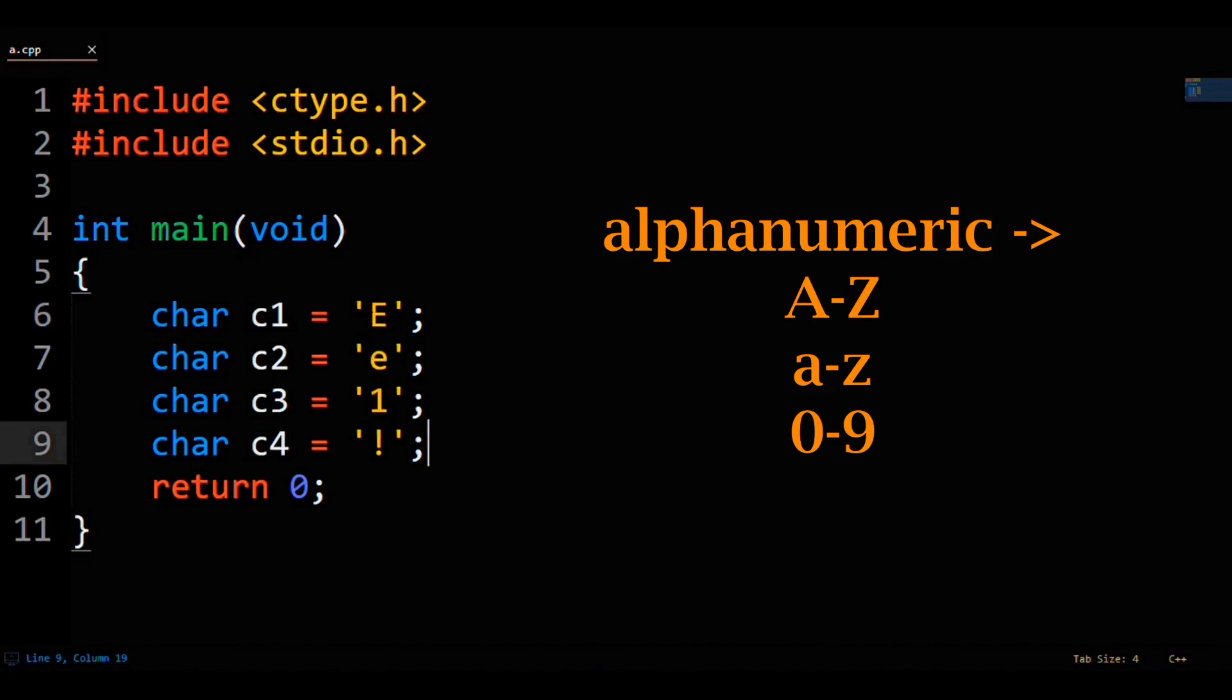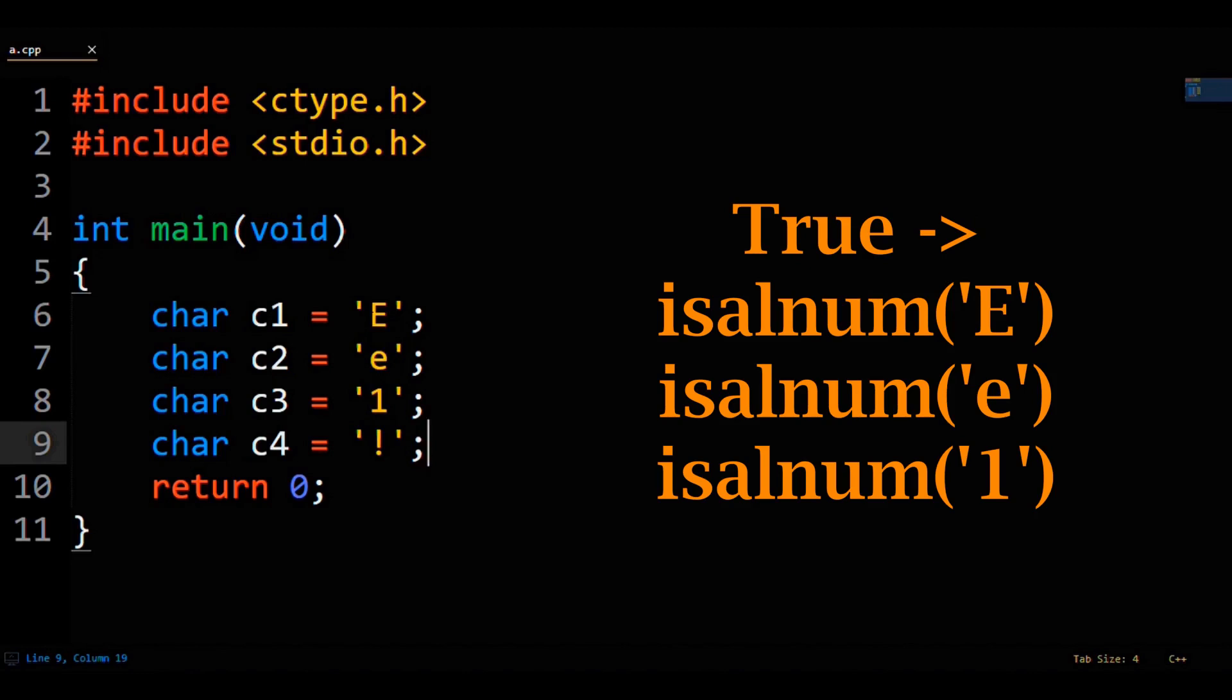C++ considers any letter or digit to be alphanumeric. So for capital E, lowercase e, and the digit 1, IsAlNum will return a non-zero number. A non-zero number indicates true for IsAlNum because that's how the function was made.